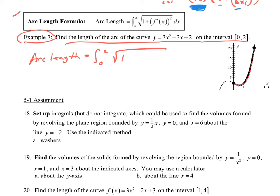And then I'm going to go 1 plus, what's my derivative? My derivative is going to be 9x squared minus 3, quantity squared. Don't forget the squared, dx. That's all you need to do. So if you pop this into your calculator, you're going to get 20.633, correct to three decimal places. That's it.